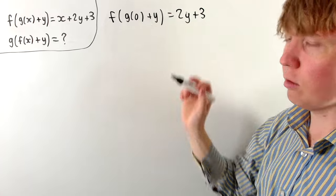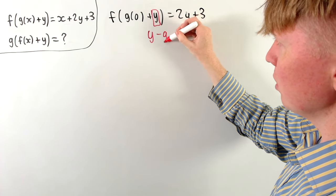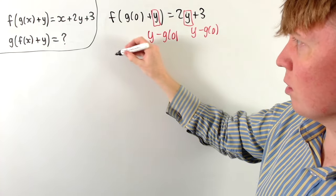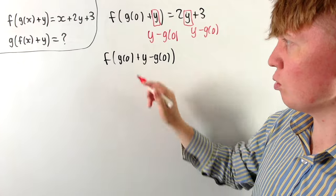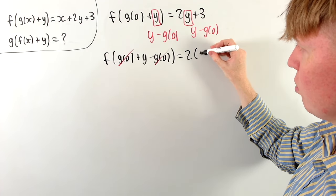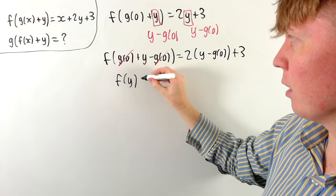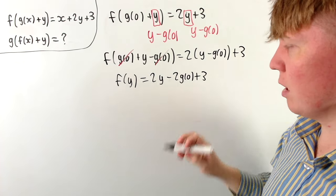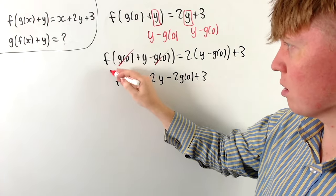This is useful now because g of zero is just a constant. So we can replace y by y minus g of zero on both sides. This gives us on the left hand side f of g(0) plus y minus g(0), and the two g zeros cancel — which is the point of that substitution. Then on the right hand side, f of y is equal to 2y minus 2 times g(0) plus 3. So we've managed to find almost what the function f is: f of y is 2y plus or minus some constant.